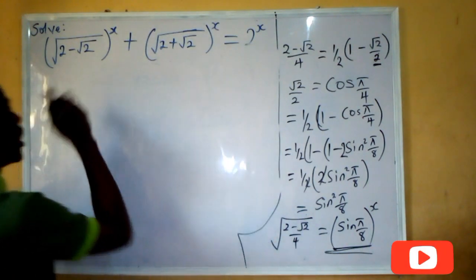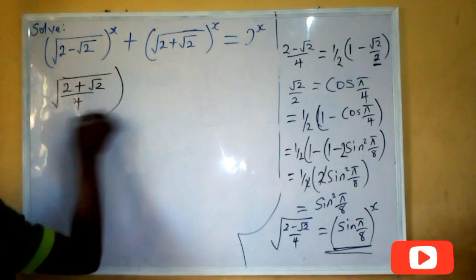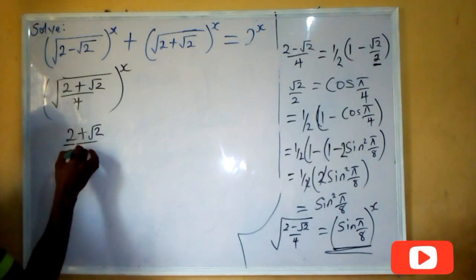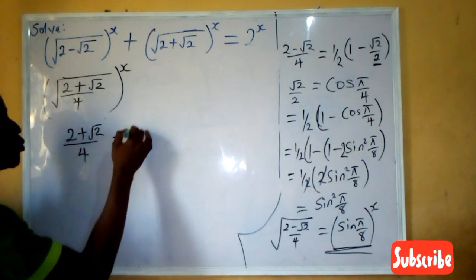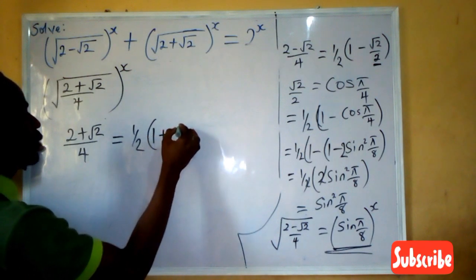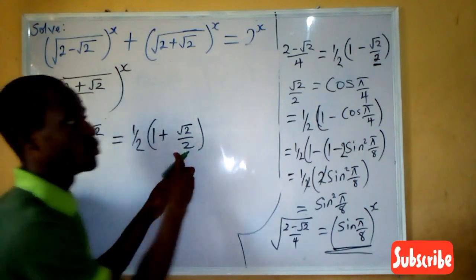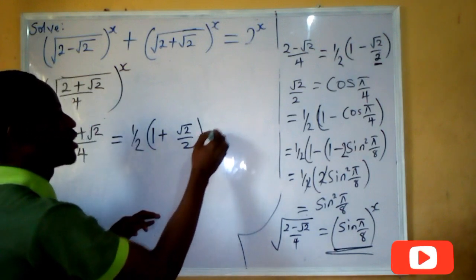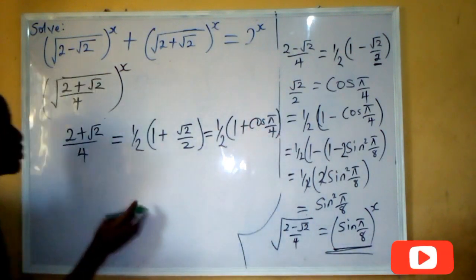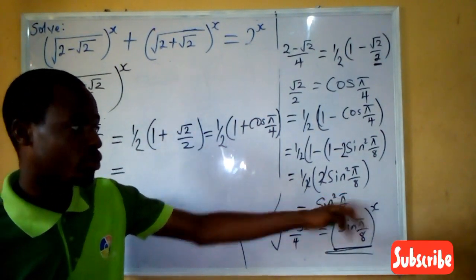Moving to the second one, which is the square root of 2 plus root 2, all over 4, all raised to power x. If I write out 2 plus root 2, all over 4, that gives us 1 over 2 — just like before — but this time it's positive, so I'm going to have 1 over 2 into 1 plus root 2 all over 2. And I told you that root 2 all over 2 is cos(π/4). So I'm going to have 1 over 2 into 1 plus cos(π/4). We are going to use the opposite identity to achieve our aim.